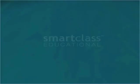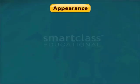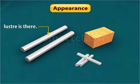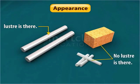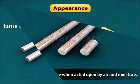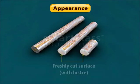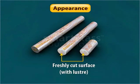One such property is appearance. Materials usually look different from each other. Metals have luster but wood and chalk do not. Even many metals lose their luster when acted upon by air and moisture. We notice luster only on their freshly cut surface.